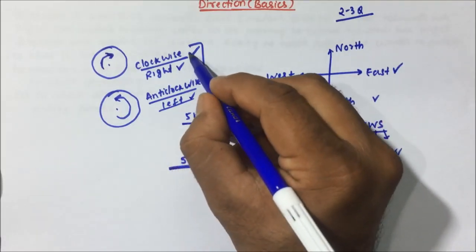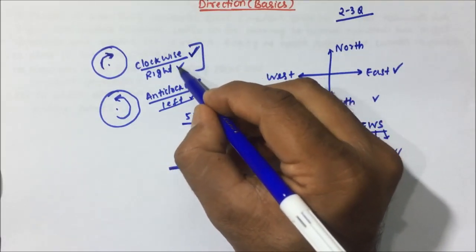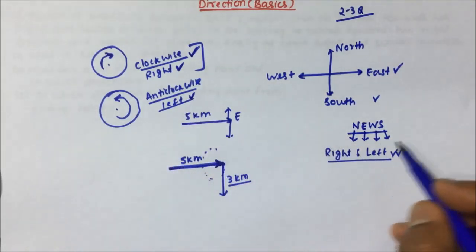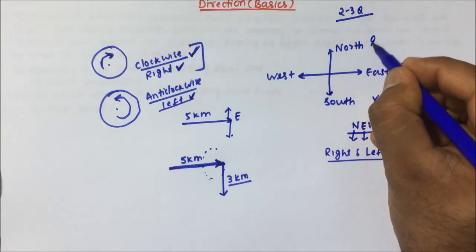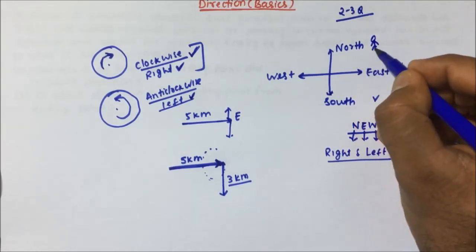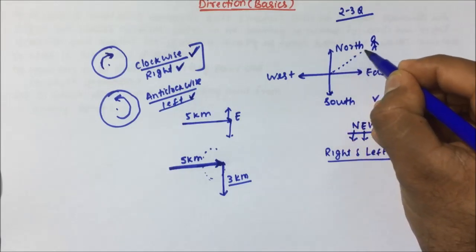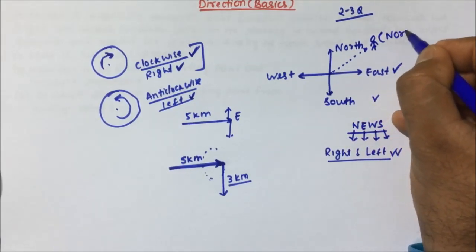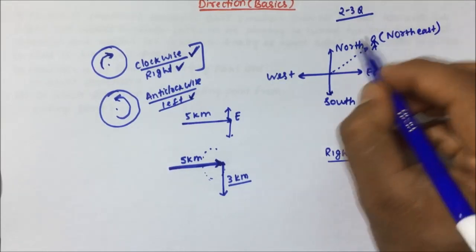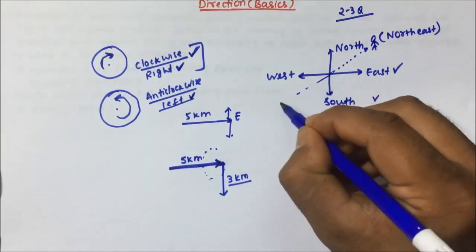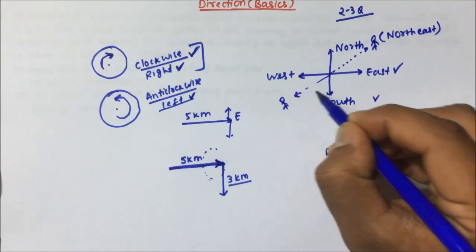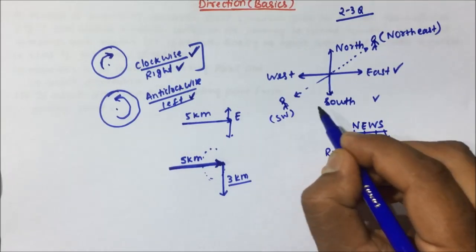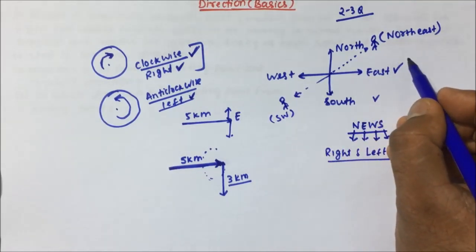For the time being, understand: if a person is moving clockwise, then it is right; if a person is moving anti-clockwise, then that is left. Now, another concept — suppose a person is in between north and east, then the person will be in the north-east direction. Same thing: if a person is standing between south and west, then the person will be in the south-west direction. So here there should not be any confusion.